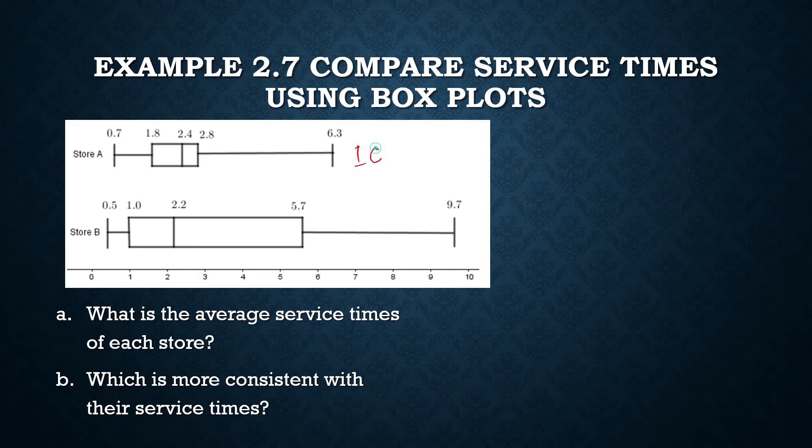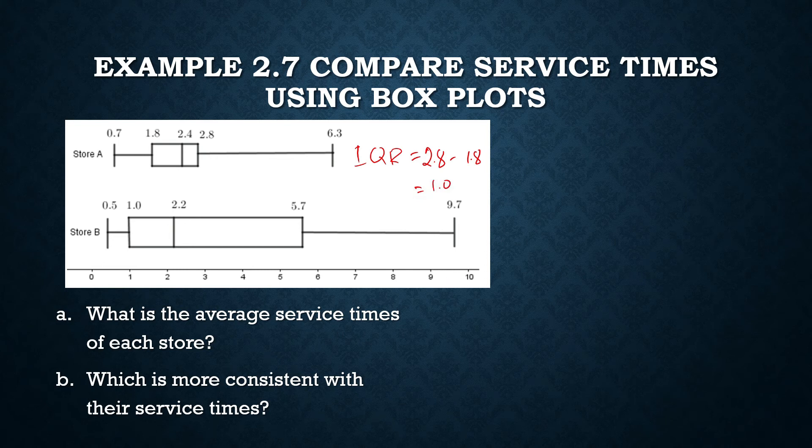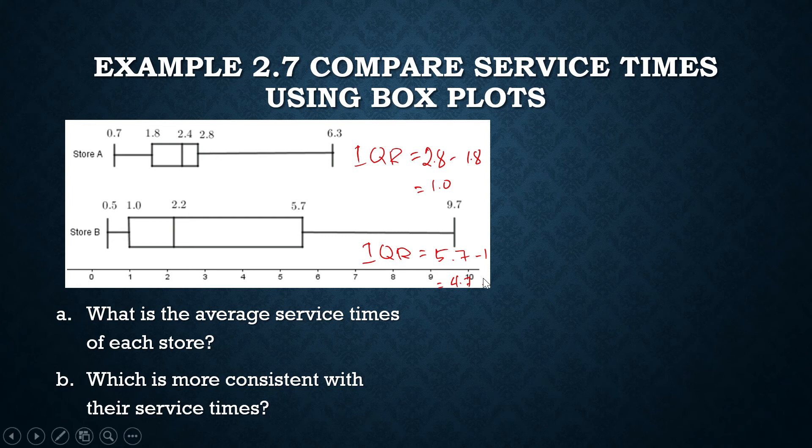IQR. For this one, the IQR is 2.8 minus 1.8, and so that is just equal to 1 minute. That is the average degree of variations in service time as measured through the IQR. How about for store B? What is the IQR? IQR for store B is big, relatively big. It's 5.7 minus 1, so this one is equal to 4.7. From here, we can make a conclusion that the service times in store A is more consistent than the service times in store B. And the statistic that we used to make that conclusion is the interquartile range.